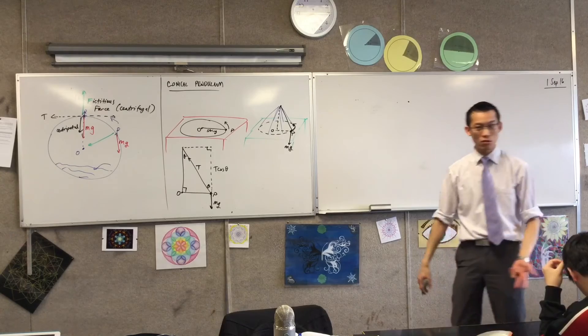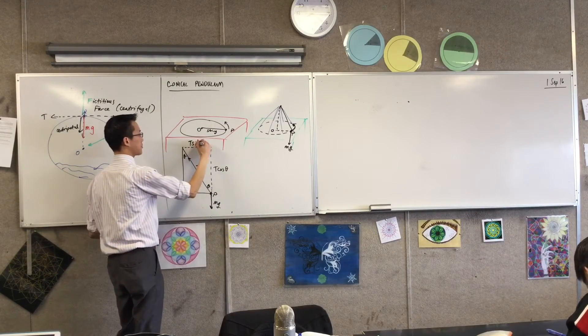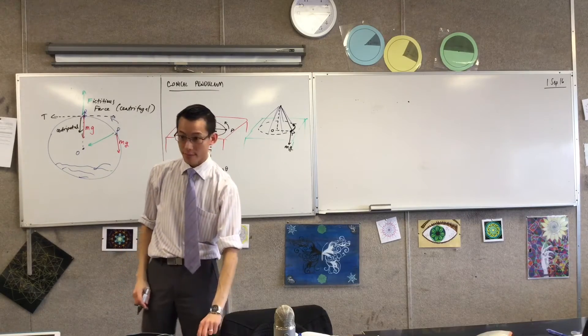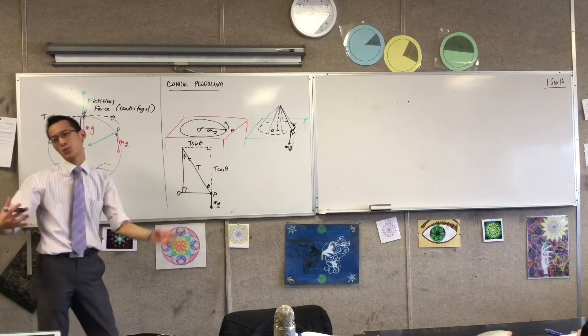By the same logic, the horizontal component is? T sine theta. Excellent. Usually, it's the other way. Yes, correct. But that's because of where we're measuring angles from, yeah?